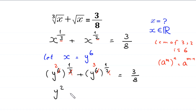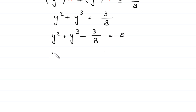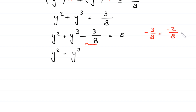So here we are left with y squared plus y cubed is equal to 3 divided by 8. Now we move this 3 over 8 to the left side: y squared plus y cubed minus 3 over 8 is equal to 0. This negative 3 over 8 can be split as negative 2 over 8 and negative 1 over 8.